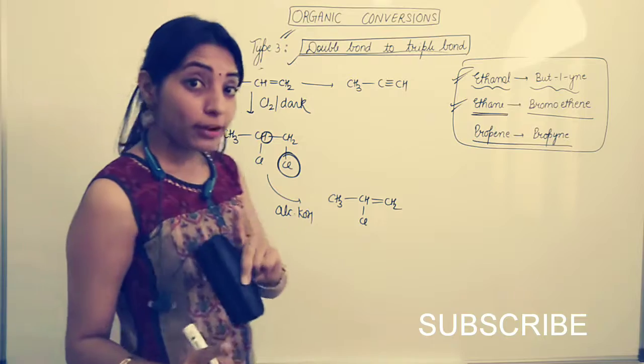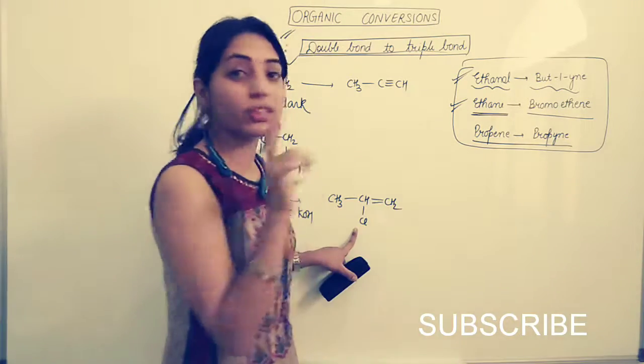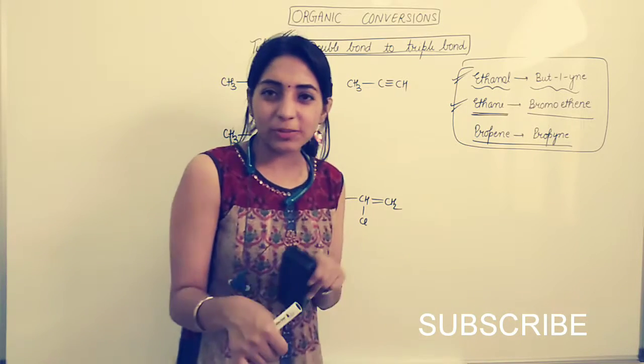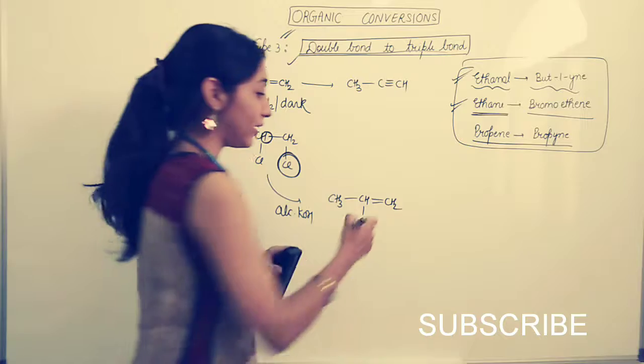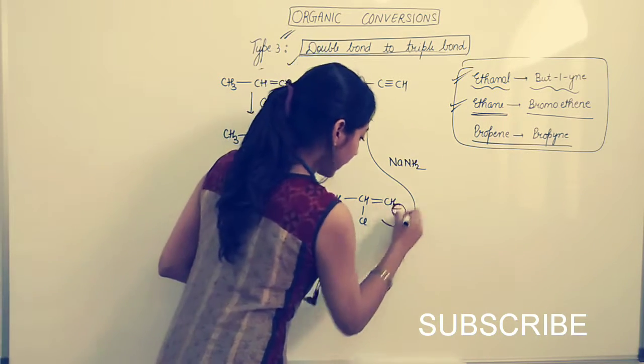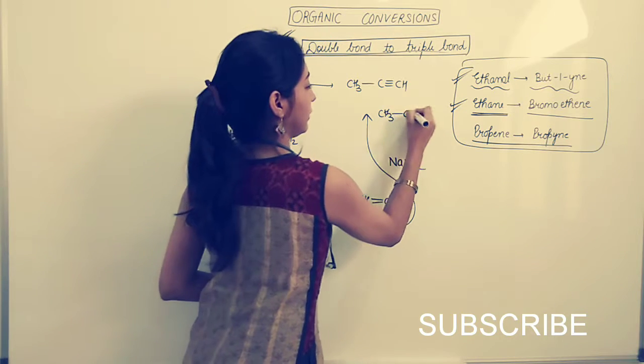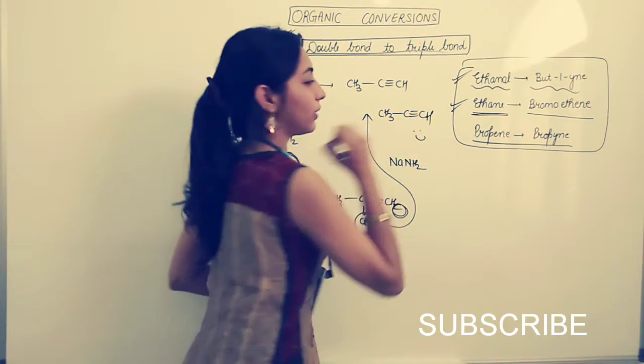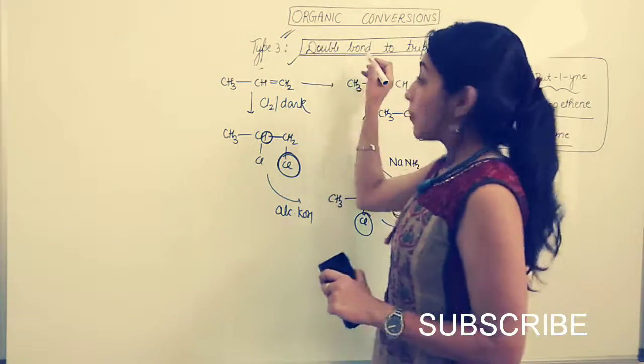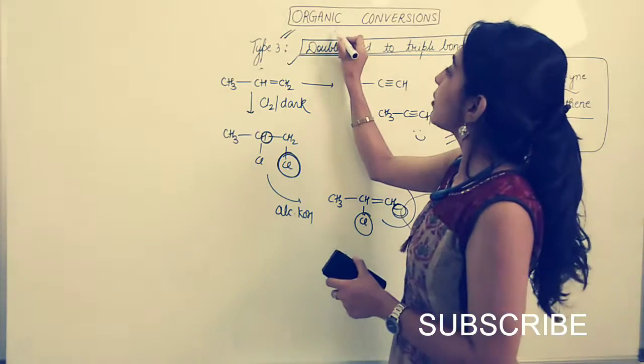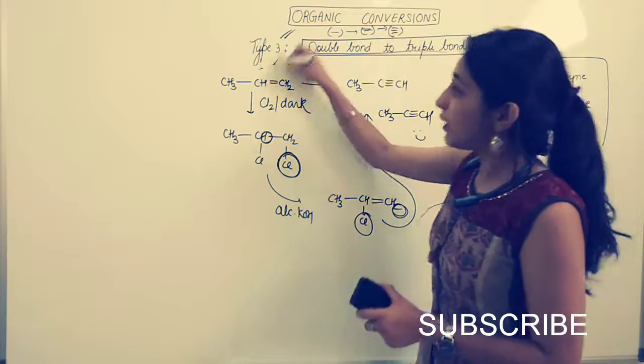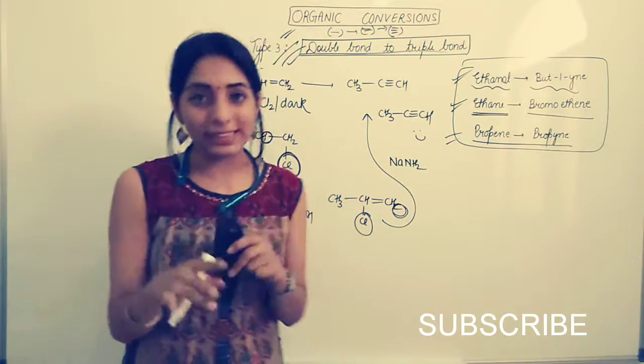But you remember I said, from here if you have to do the elimination, you cannot use alcoholic KOH because that's kind of old aged. So you have to use sodamide. So I'll add NaNH2. What will happen? One H, one Cl goes away and we get CH3-C triple bond CH. That's it. So I hope with this concept, how to convert single bond to double bond to triple bond, if you know this type 3 of conversion, I hope things will be easy.